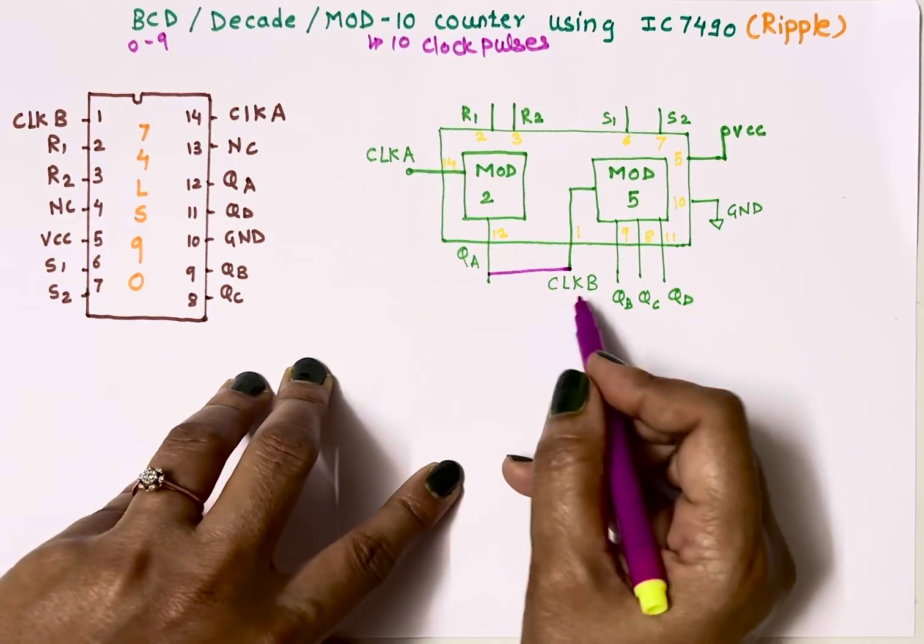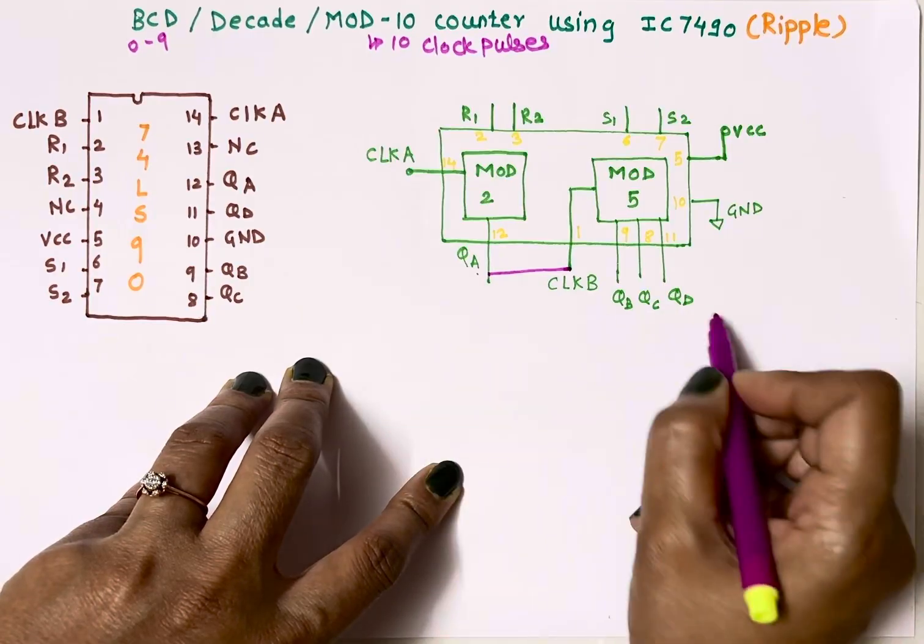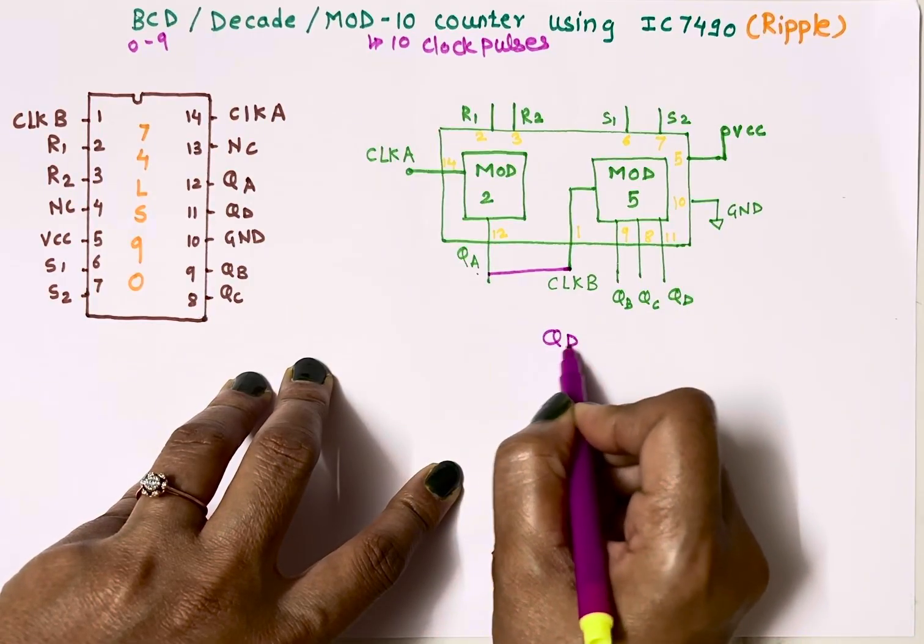Here we have four outputs: QA, QB, QC, and QD. Out of these four, QD is most significant bit and QA is least significant bit.